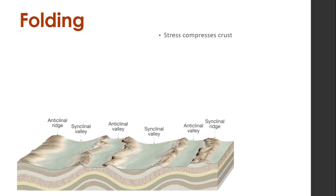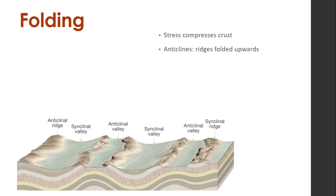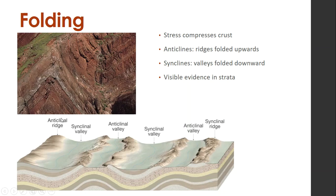We also get folding that happens when stress is compressing the crust together. We get anticlines and synclines — anticlines are the ridge that folds up, and synclines are where it folds down. You can imagine if you take a piece of paper and slowly compress it, it would do a little wavy thing. We can see this visible evidence in the strata; when we look at the layers of rock, we can see the folding very clearly.